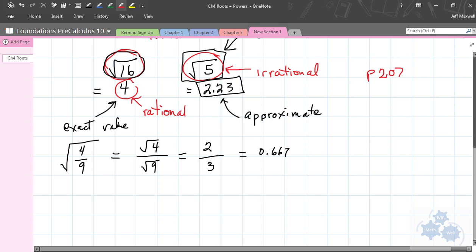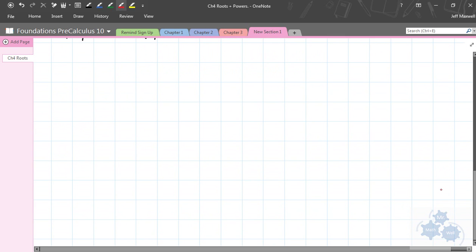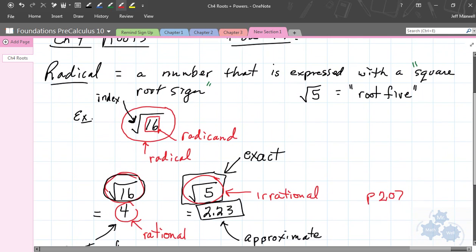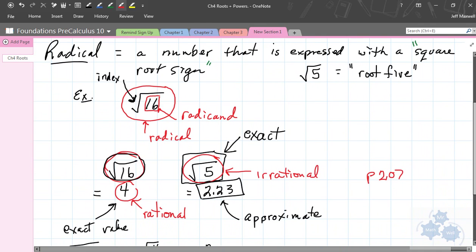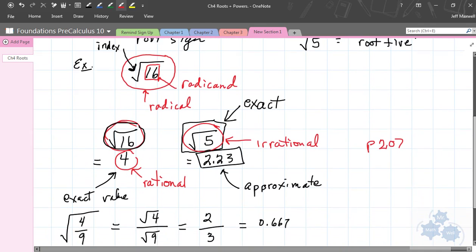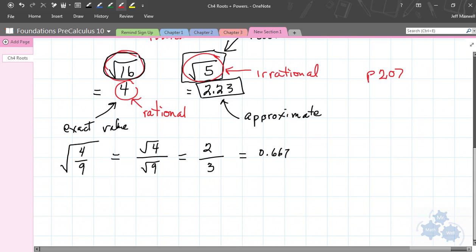Before you go, I'm going to give you a short assignment again. You have your exam tomorrow, Chapter 3. This is your assignment for Chapter 4. That's your mini-lesson. You can check this out again. It's a mini-lesson on radicals, rational, irrational, exact, approximate values.